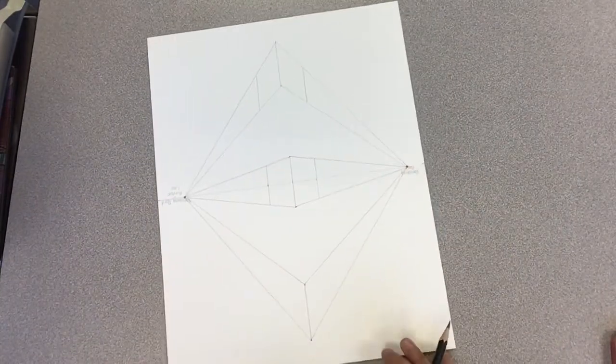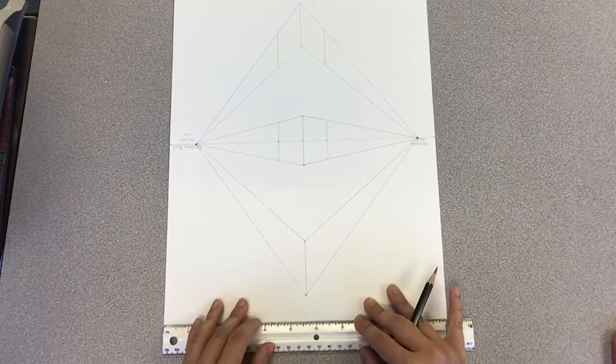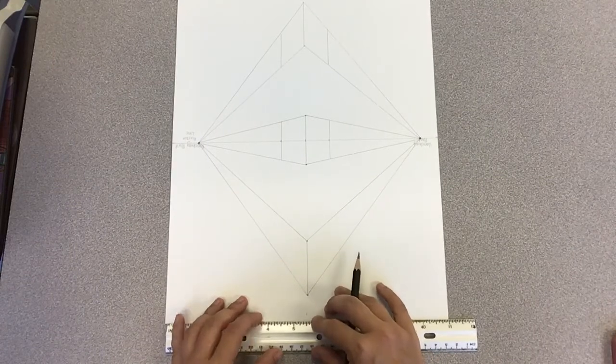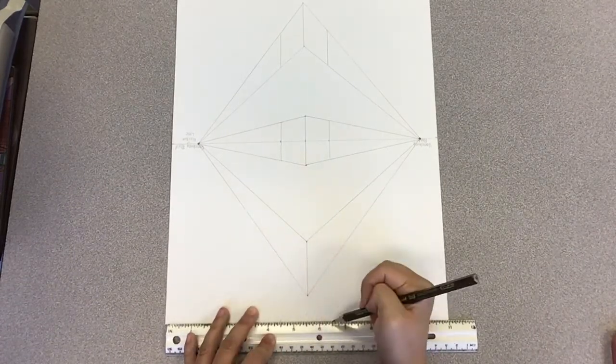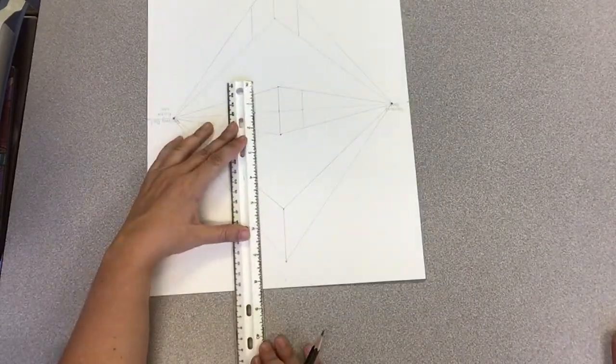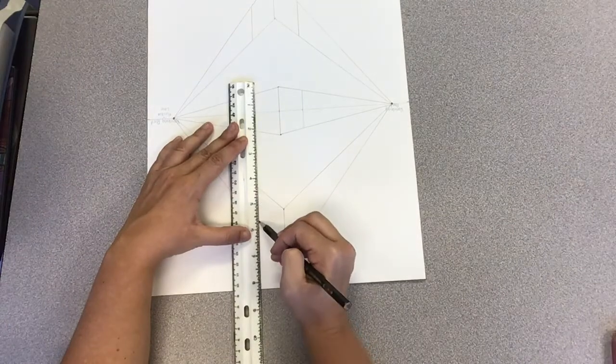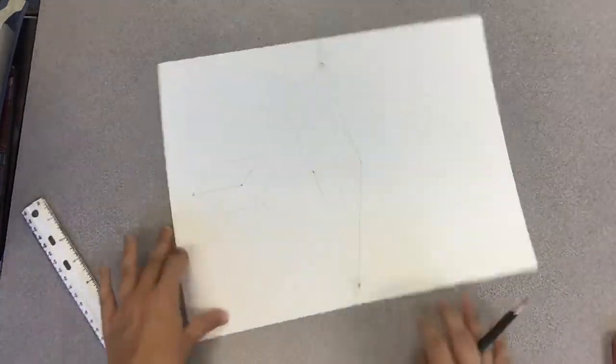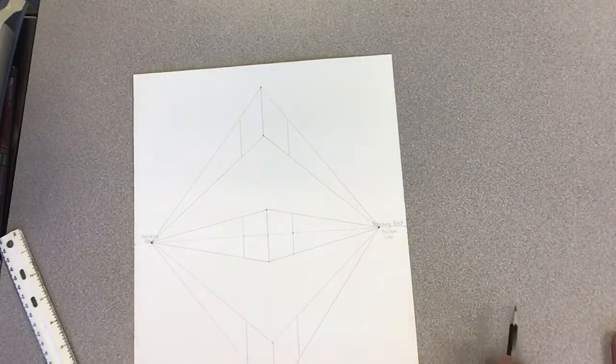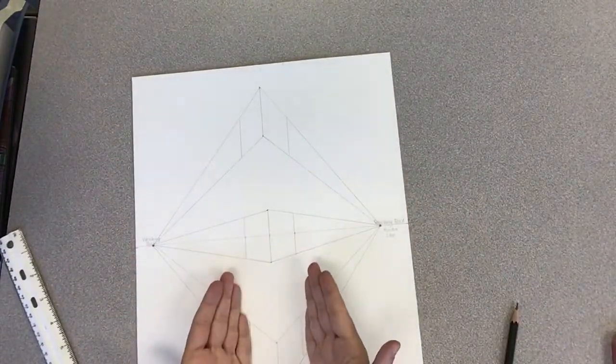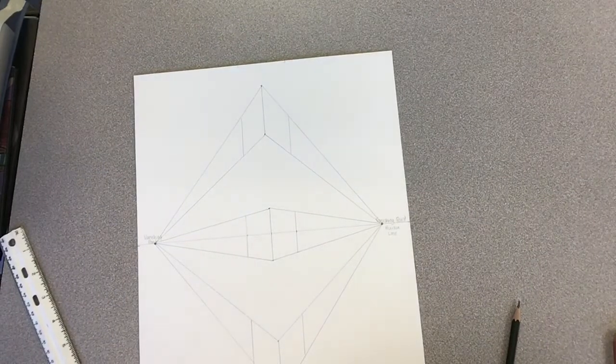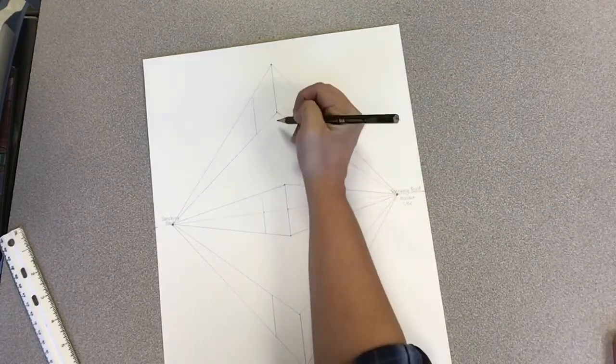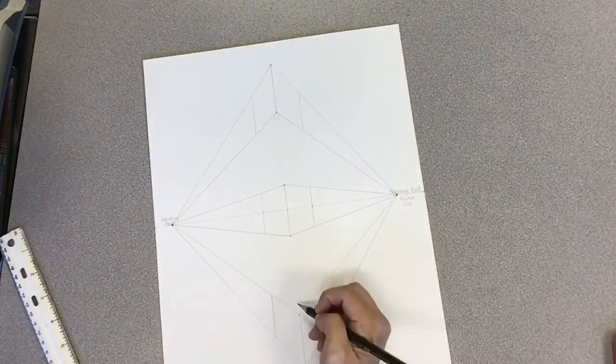We'll do the same thing over here. We're going to make these tick marks. One was at, let's see, line up my five and a half right there. One was at four and a half. One was at six and a half. Line those up. So, now all three of my boxes have their outer edges drawn. So, the last thing that you need to do on this is you need to create the bottom of this building and the top of this building.